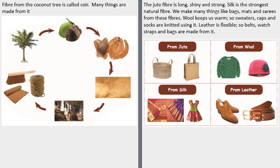Wool keeps us warm. So sweater, caps and socks are knitted using it. Then we have leather which is flexible. So belt, watch straps and bags are made from it.